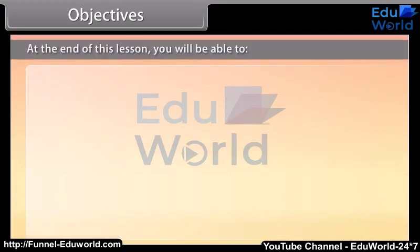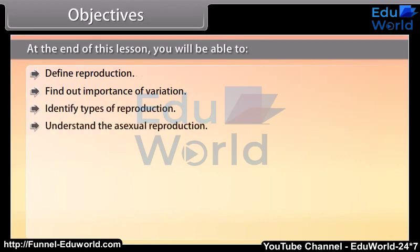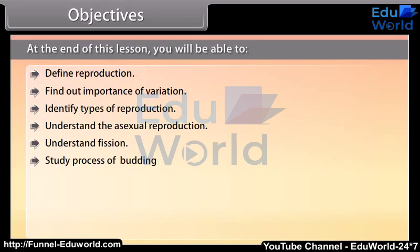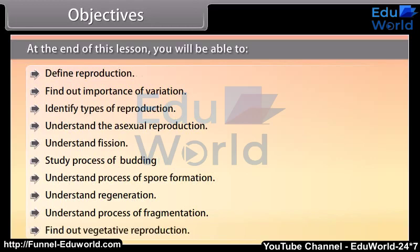At the end of this lesson, you'll be able to: define reproduction, find out the importance of variation, identify types of reproduction, understand asexual reproduction, understand fission, study the process of budding, understand spore formation, understand regeneration, understand the process of fragmentation, and find out vegetative reproduction.